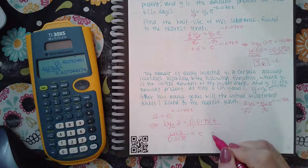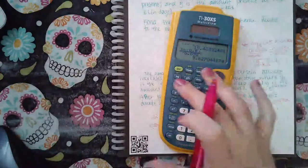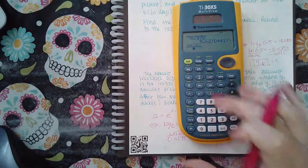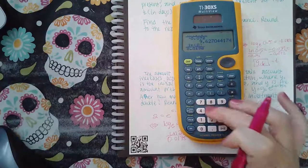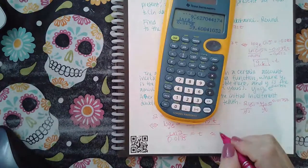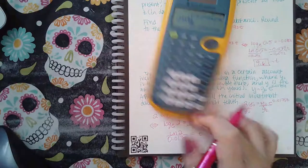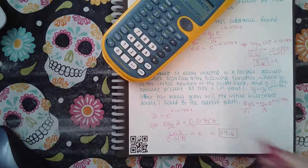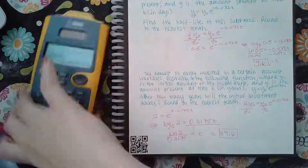What do I get for t? I get ln of 2 over 0.0175. t is actually equal to 39.6 because it wants me to round to the tenth, and so that's it.